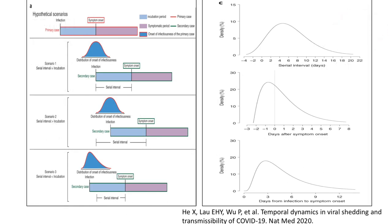In this graph, 94 patients were included with 77 infector-infectee transmission pairs (index and secondary cases). Higher viral load was detected at the time of symptom onset, and the onset of infectiousness also peaked on or before symptom onset. Secondary cases were infected during the index case's pre-symptomatic stage, which is of particular concern for COVID-19.